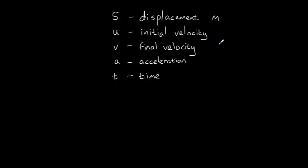These must be in SI units, so displacement in metres, initial velocity in metres per second, final velocity in metres per second, acceleration in metres per second squared, and time in seconds. There are five SUVAT equations, of which four are necessary at A-level.